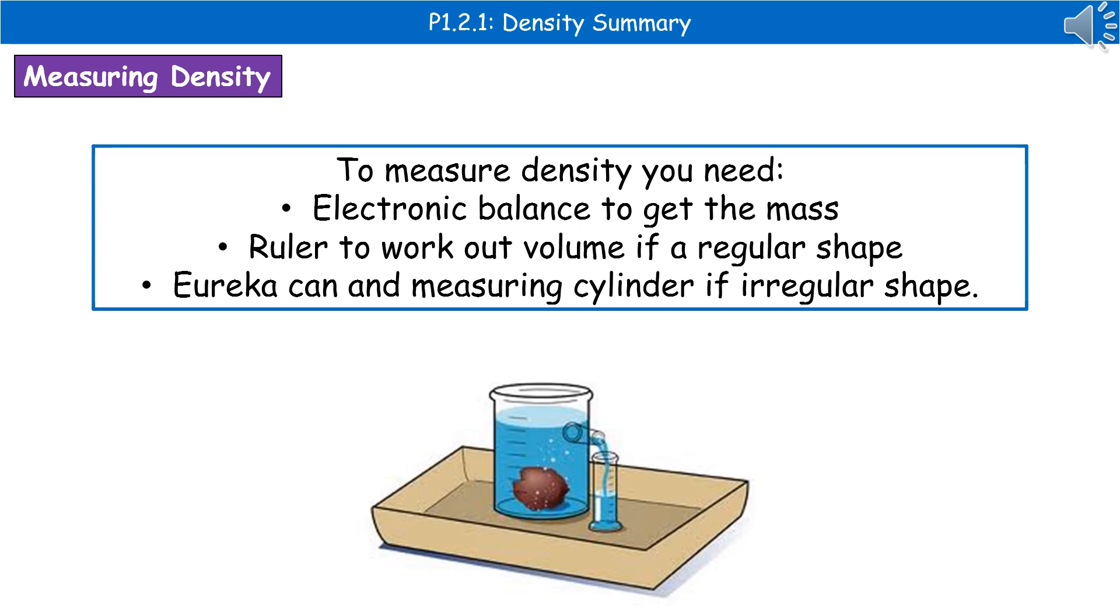Then, you place a measuring cylinder under the spout there, so that as soon as you put your oddly shaped object inside, it's going to displace the water of a certain volume, which will be the volume of the object. And where you've got your measuring cylinder, you can just read off the actual volume of water displaced, which is the volume of your object.